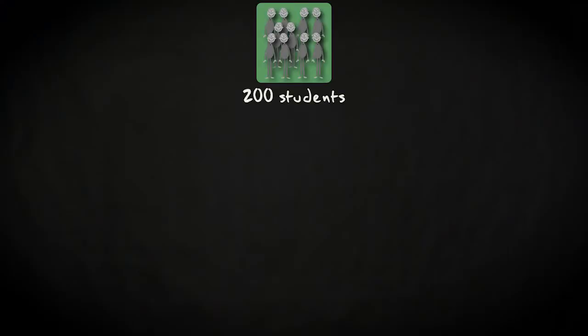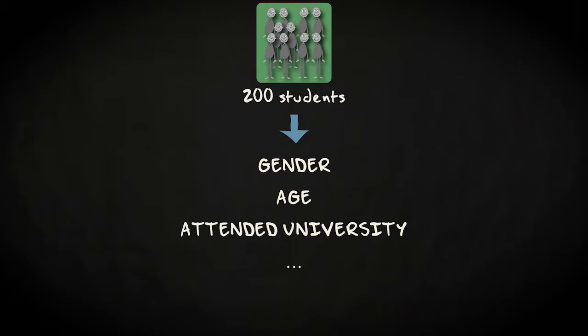If you have selected a sample of 200 respondents from a population of about 300,000 students, which is the total number of students in London, you basically focus on a subset of your population. If you measure a couple of variables, like gender, age, attended university, etc., you can do all kinds of computations.